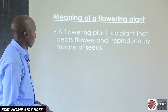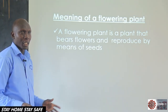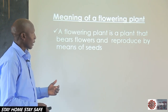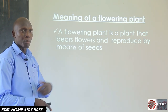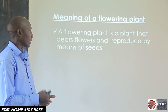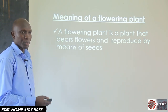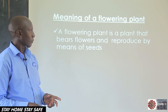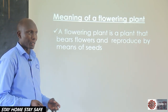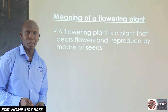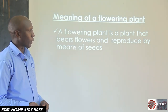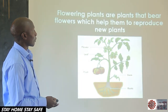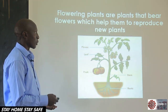To begin, we want to define a flowering plant. We already saw what a non-flowering plant is, but today we are looking at a flowering plant. A flowering plant is just actually the opposite of a non-flowering plant — it is a plant that bears flowers and reproduces by means of seeds. The non-flowering plant does not bear flowers, but these flowering plants bear flowers. So look around your compound: any plant you see having flowers is said to be a flowering plant. A flowering plant bears flowers, which allows it to reproduce new plants.